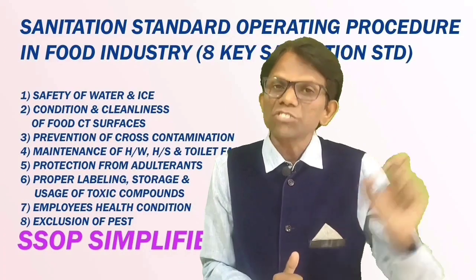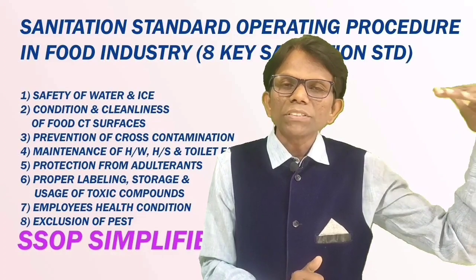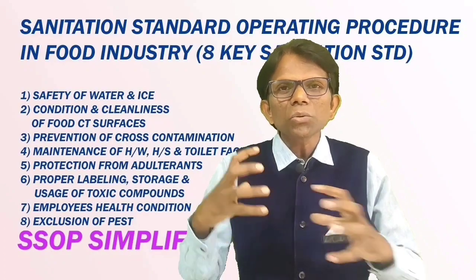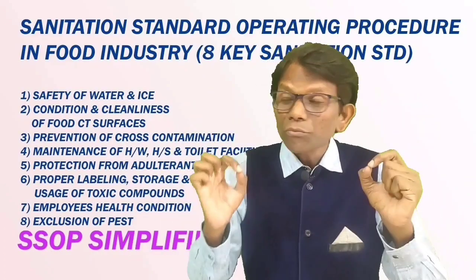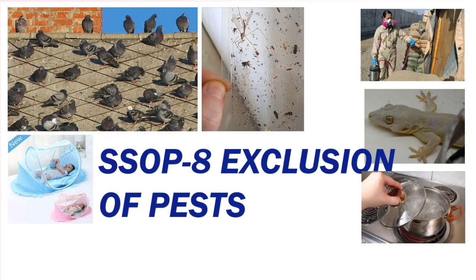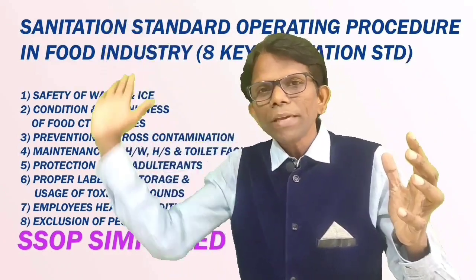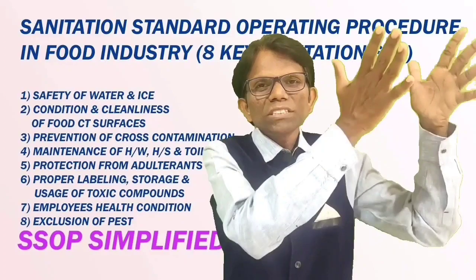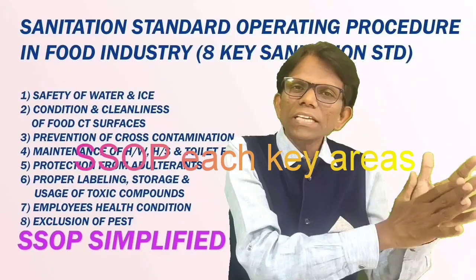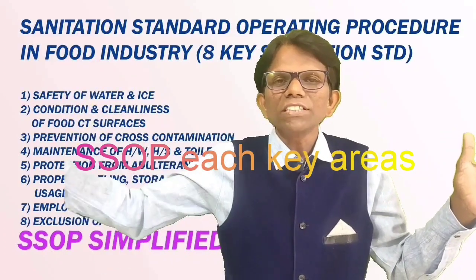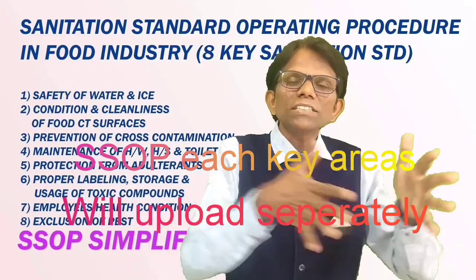The eighth SSOP step is pest control — prevention of pests. In the food industry, whereas the mother controls pests by always serving warm food to her baby and keeping a lid on the food, so there are no chances of flies, pest contamination, or pest infestations. After feeding the baby and when the baby goes to sleep, the mother uses a mosquito net, because mosquitoes can spread diseases like malaria and others. This is how we can correlate all 8 key SSOP sanitation areas with how a mother feeds her baby after six months — making those areas easy to memorize using this mnemonic.